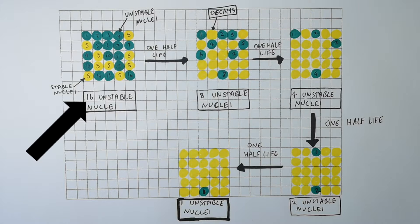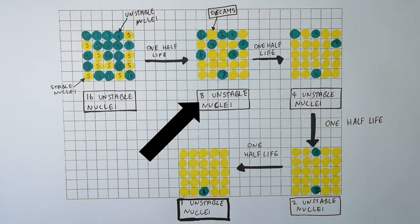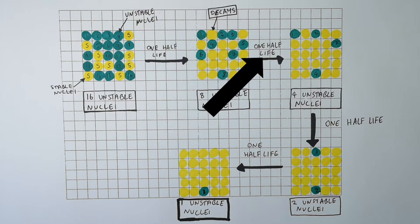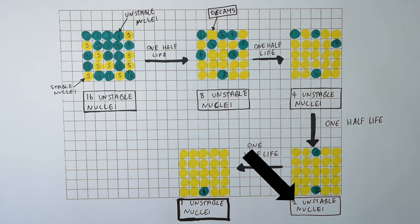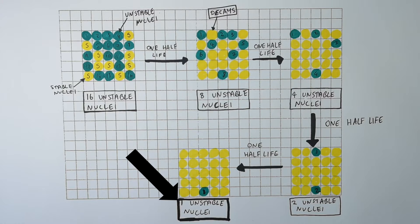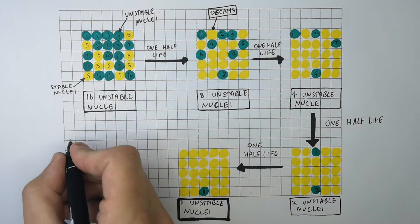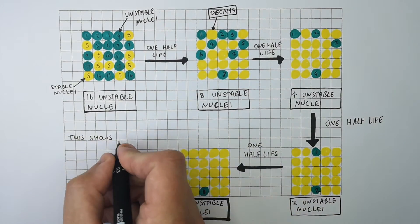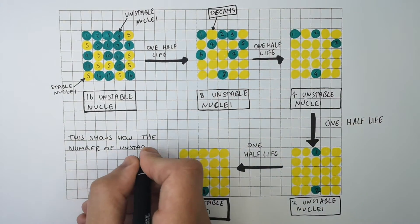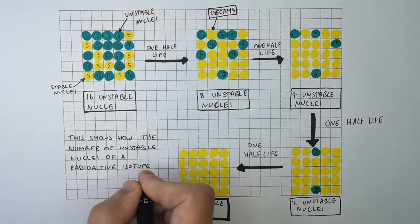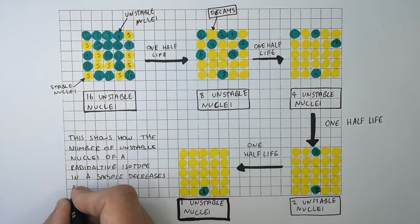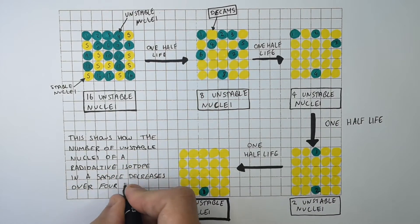So we started off with 16 unstable nuclei. After 1 half-life there were 8, then after another half-life there were 4, then 2, and after the final half-life there was 1 unstable nucleus. This shows how the number of unstable nuclei of a radioactive isotope in a sample decreases over 4 half-lives.